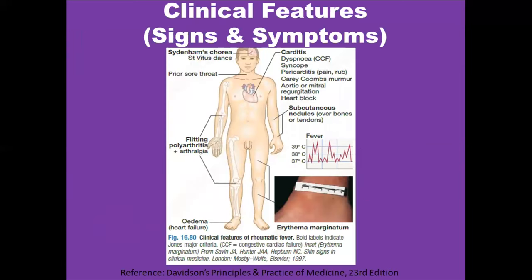The patient can present with Sydenham's chorea, evidence of sore throat, fleeting arthritis or arthralgia, edema due to heart failure, and the typical rash of acute rheumatic fever. The rash is characterized by macules initially with central clearing and is evanescent. The patient can also present with high-grade fever and soft cutaneous nodules over bones and tendons, as well as symptoms of carditis like shortness of breath and syncope.